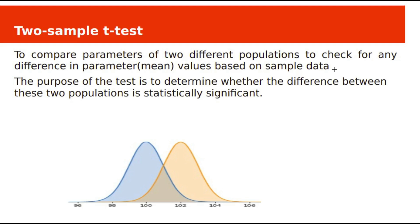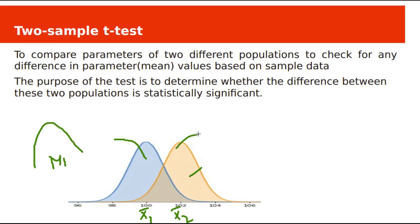The purpose is to determine whether the difference between these two populations is statistically significant or not. Here we have two sampling distributions with different means: the first sample mean x1-bar is 100, and the second sample mean x2-bar is 102. We need to check their respective population means mu1 and mu2, and whether they are equal or not.